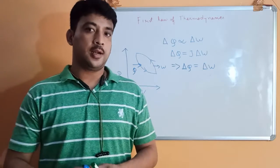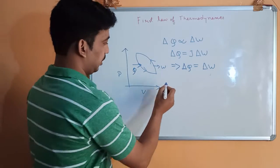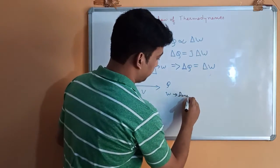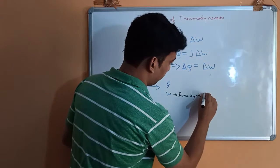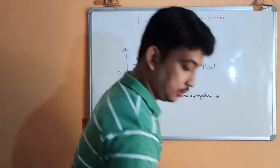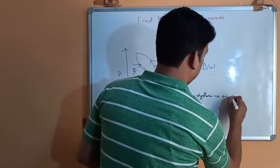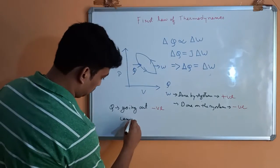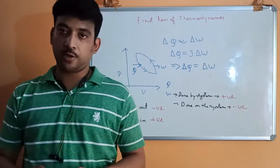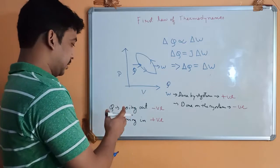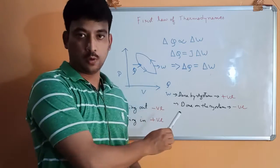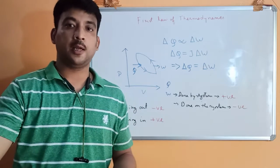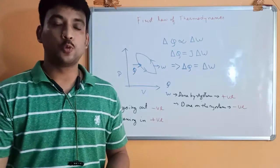A few important points regarding cycle and thermodynamic processes: when taking Q and W as positive or negative — work done by the system is positive. For example, a turbine does work. We apply heat energy into the turbine and the turbine produces work — that work is positive work, done by the turbine.